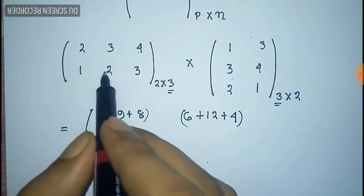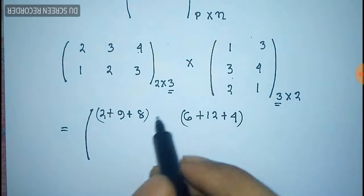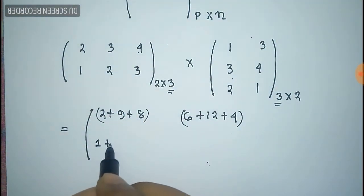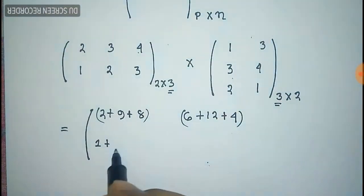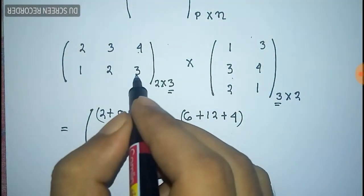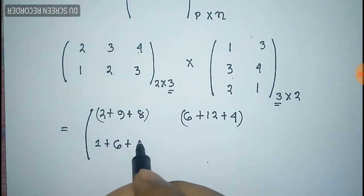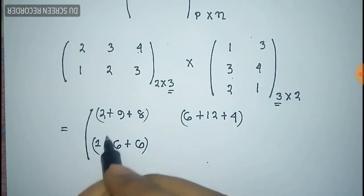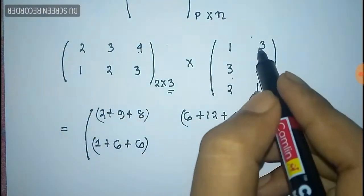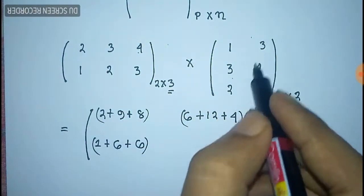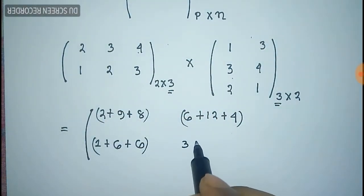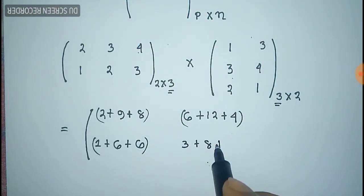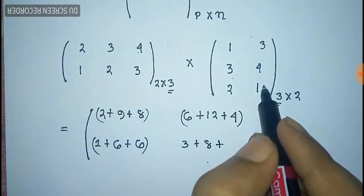Then second row with first column: 1×1 = 1, plus 2×3 = 6, plus 3×2 = 6. Then second row with second column: 1×3 = 3, plus 2×4 = 8, plus 3×1 = 3.